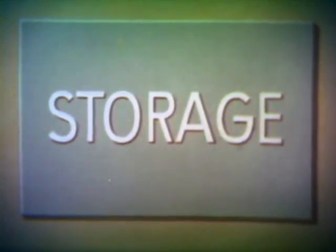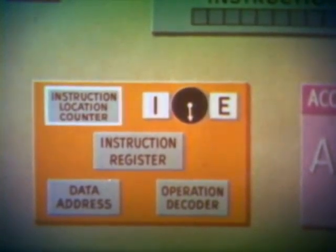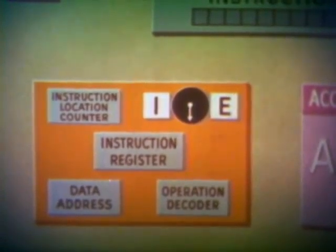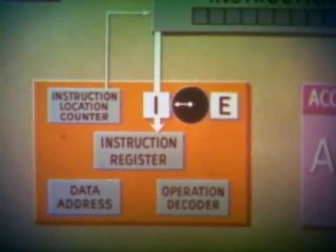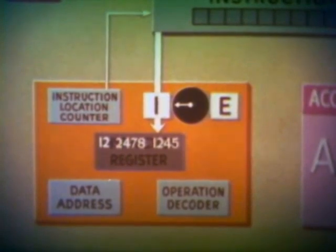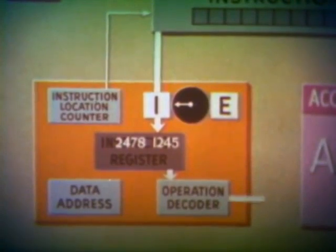Let us assume that the storage unit contains 10-digit data and instruction words received from the input unit, and that the instruction location counter has been set to the address of the first instruction. When the computer is started and instruction time begins, the instruction location counter causes the instruction word to leave its storage address and be placed in the instruction register, where it remains during the processing. Such an instruction might be: add contents of address 2478 to contents of address 1245 and store in accumulator. The operation part of the instruction is interpreted by decoding and then sent to the arithmetic unit, setting it up for the type of operation ordered — add in this case.